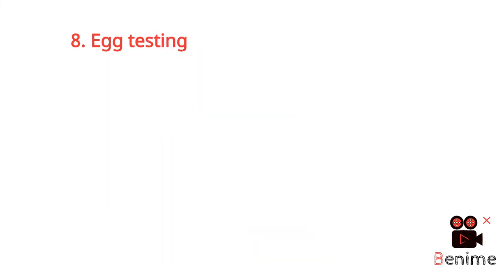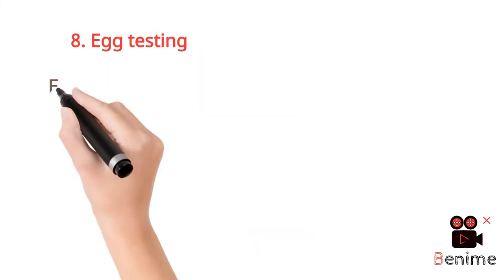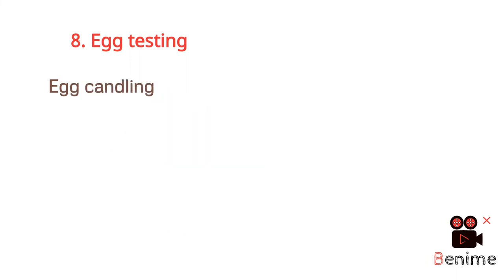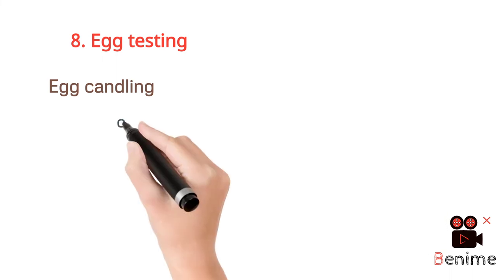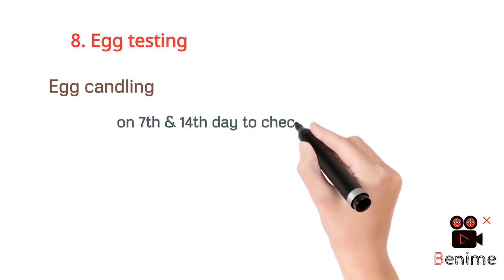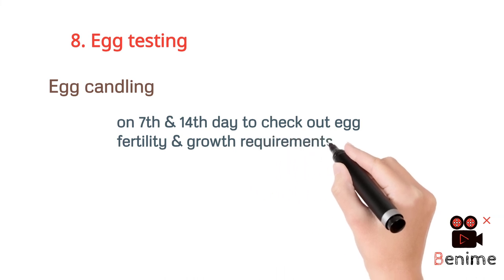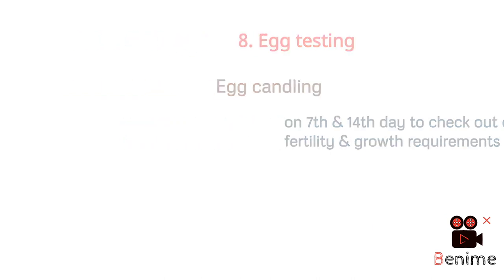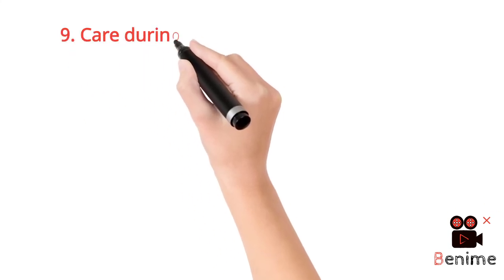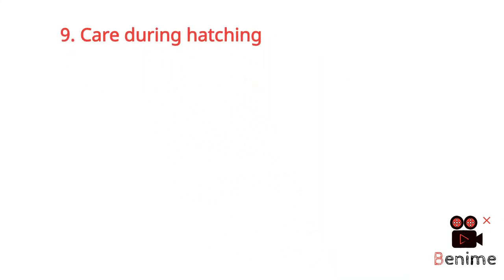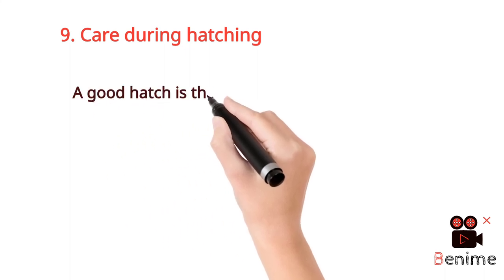The eighth and most important managing condition is egg testing. Egg testing is important to check the fertility and viability of eggs, in which egg candling is done. Egg candling is the process through which light is passed through the eggs to check their viability. It is done twice in an incubation period: first on the seventh day and second on the 14th day of the incubation period.